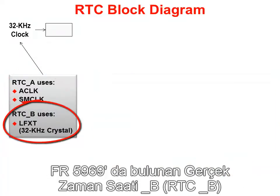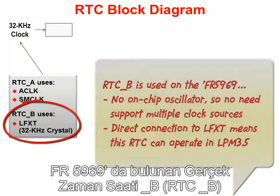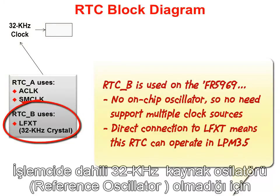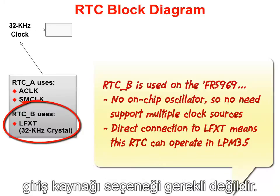On the other hand, RTC-B, which happens to be found on the FR5969, is driven directly from an external low-frequency crystal. This CPU doesn't have an internal 32 kHz reference oscillator, so an input source option isn't required.